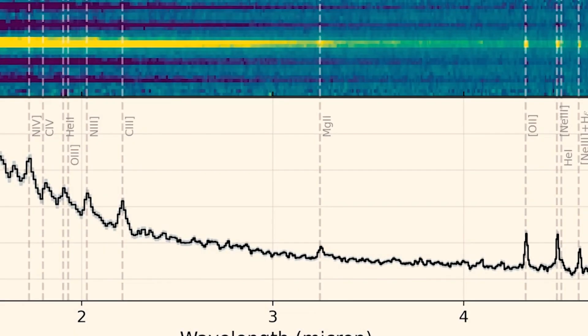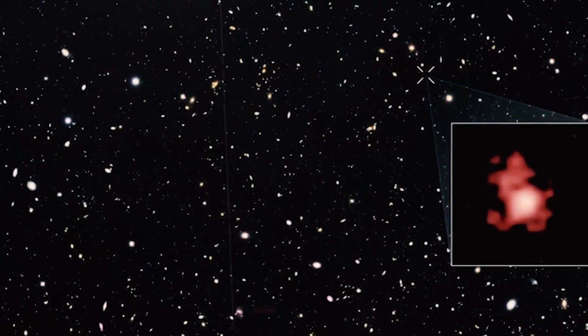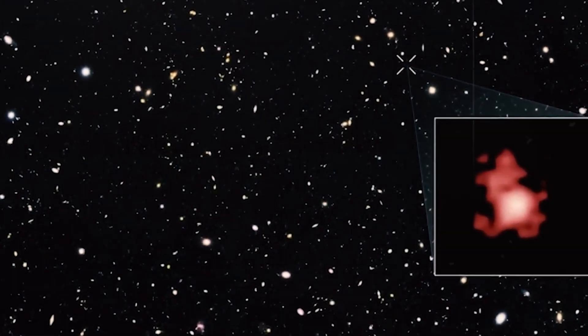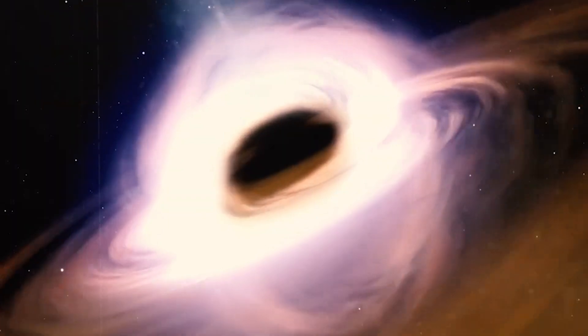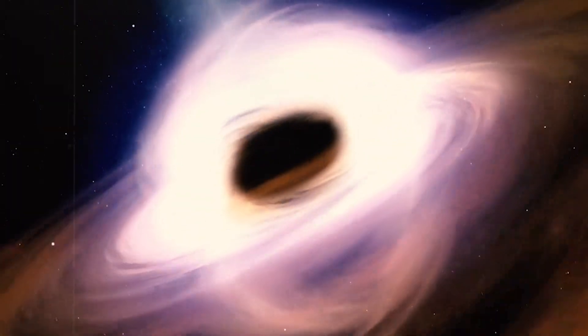By analyzing the image and the spectrum of the black hole and the galaxy, Webb was able to measure the mass and the accretion rate of the black hole, and the distance and the age of the black hole and the galaxy.